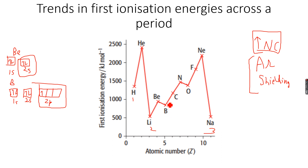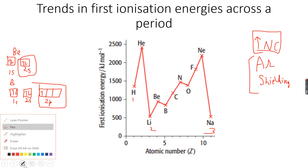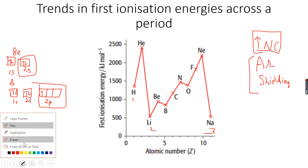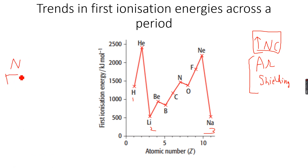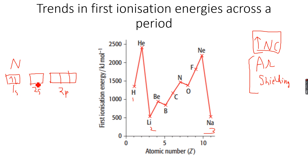Now let's look at the exception between nitrogen and oxygen — this has a completely different explanation. Nitrogen has 7 electrons: 1s, 2s, and then in the 2p subshell one electron goes into each of the three orbitals. When we have oxygen it has 8 electrons.